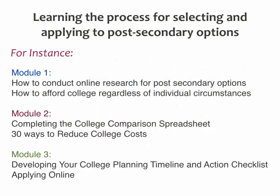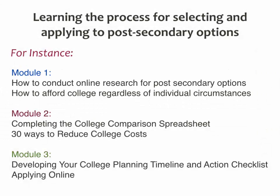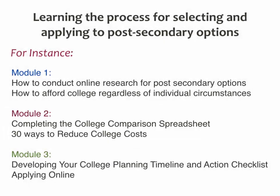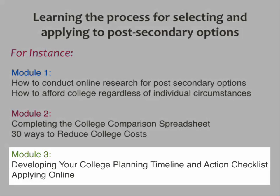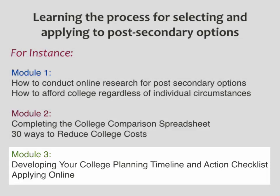It's also really important to recognize that each of the modules builds upon the previous year. In Module 1, you see how to conduct online research for post-secondary options and how to afford college regardless of individual circumstances. In Module 2, it gets more specific — they complete a college comparison spreadsheet and look at 30 ways to reduce college costs. Then in Module 3, they develop their college planning timeline and action checklists.